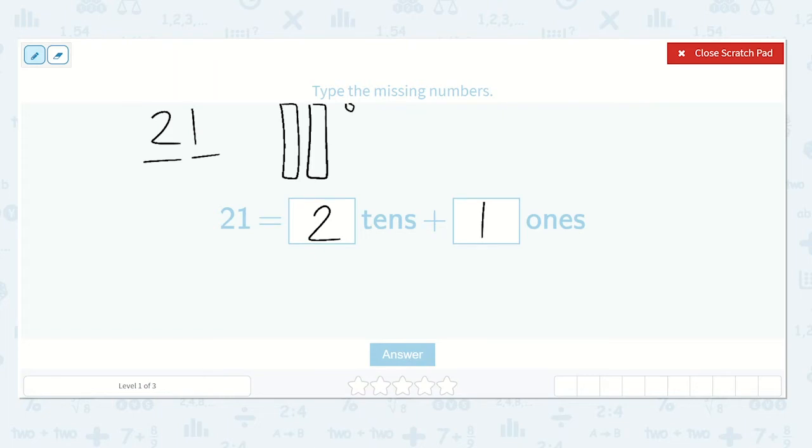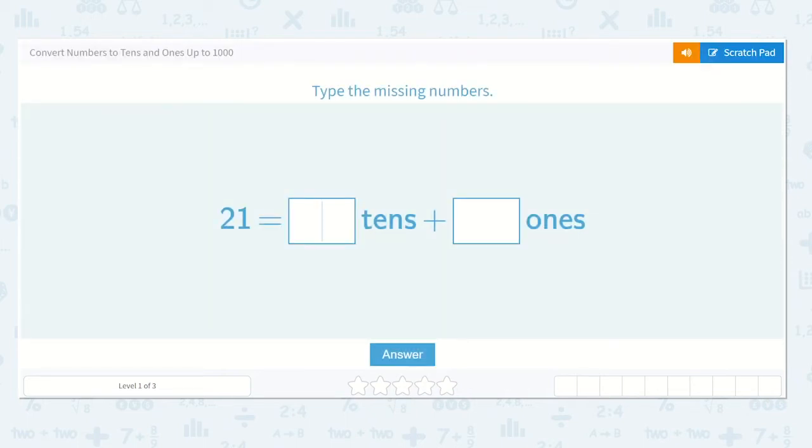And we know that's true because we have two tens, so a two is in our tens place, and we have one one, so a one is in the ones place. 21 is equal to two tens plus one one.